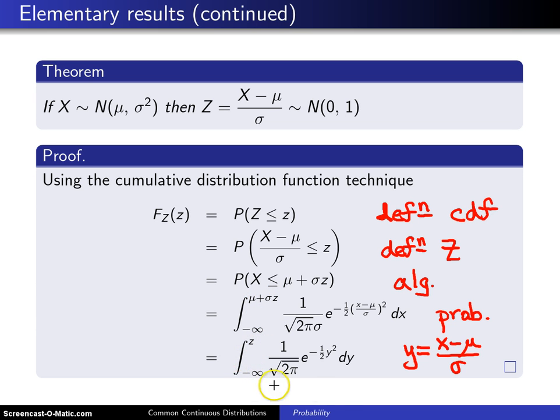And this right here is the integral of the standard normal probability density function from negative infinity to z. And that is recognized as the CDF of a standard normal random variable. And in fact, that's exactly what we wanted to prove. And that will complete the proof.